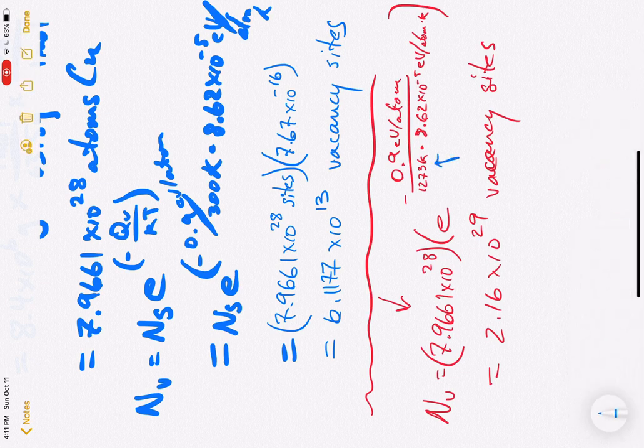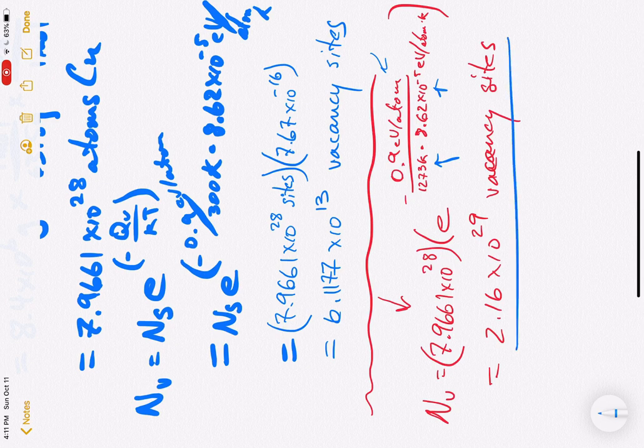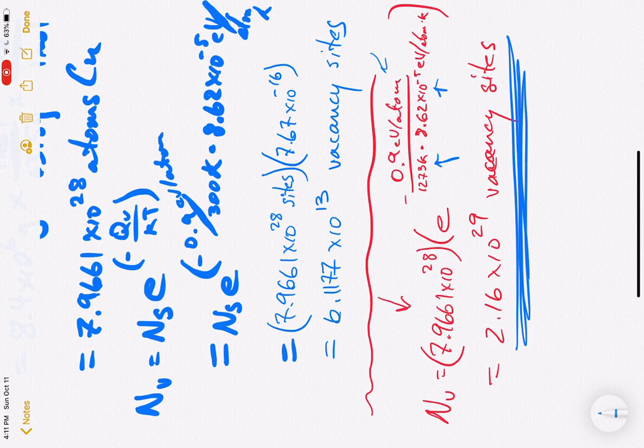A thousand degrees C is 1273 K. We have the same Boltzmann constant, same activation energy. And so putting these two together, you should have got an answer at about 2.16 times 10 to the 29 vacancy sites in this case.